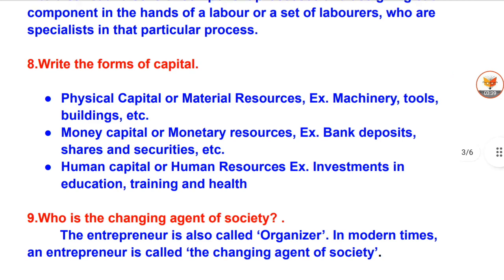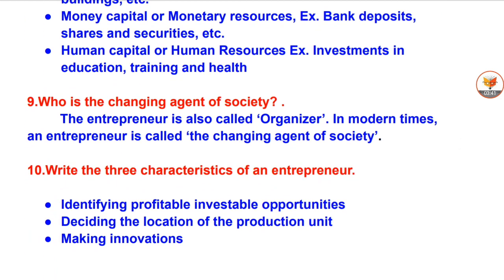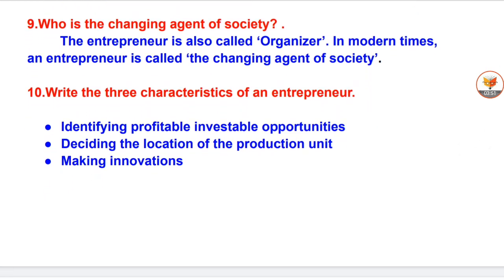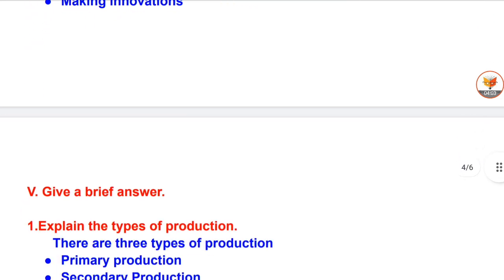Question 9: Who is the changing agent of society? The entrepreneur is also called organizer. In modern times, an entrepreneur is called the changing agent of society. Question 10: Write the three characteristics of an entrepreneur: identifying profitable investable opportunities, deciding the location of the production unit, and making innovations.